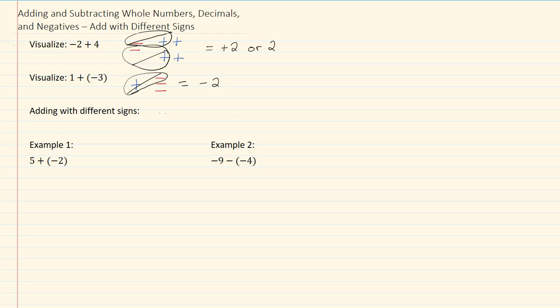Our rule then for adding with different signs is that we subtract the numbers. And we're going to keep the sign of the larger number, the number that's farther from zero.